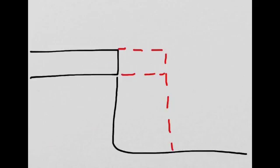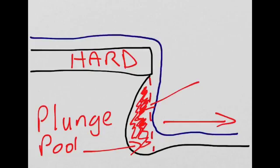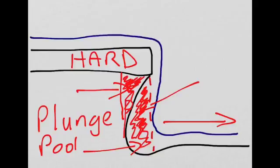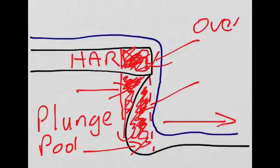As you can see in this part here, if I shade in this area red, eventually this will erode and fall into the plunge pool. Also, this creates an overhang in this area here which I'm shading in — so this will be the overhang.